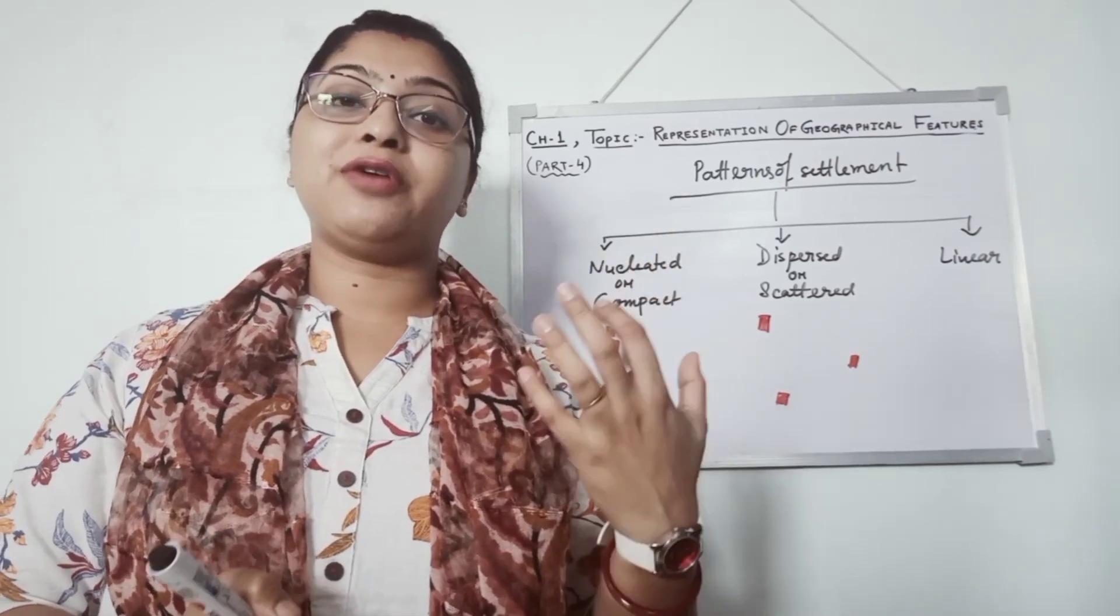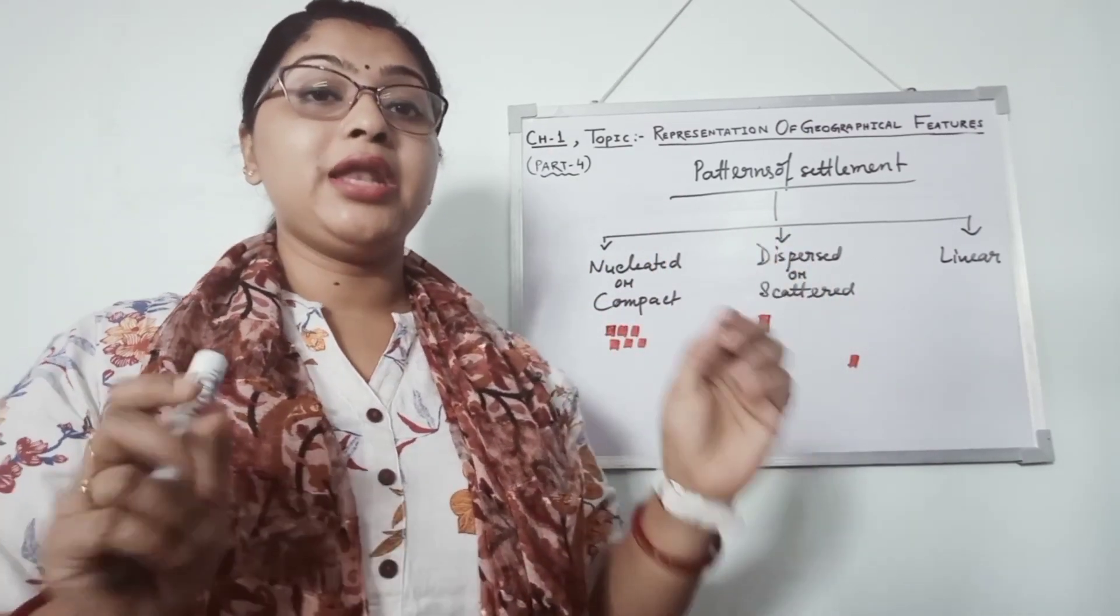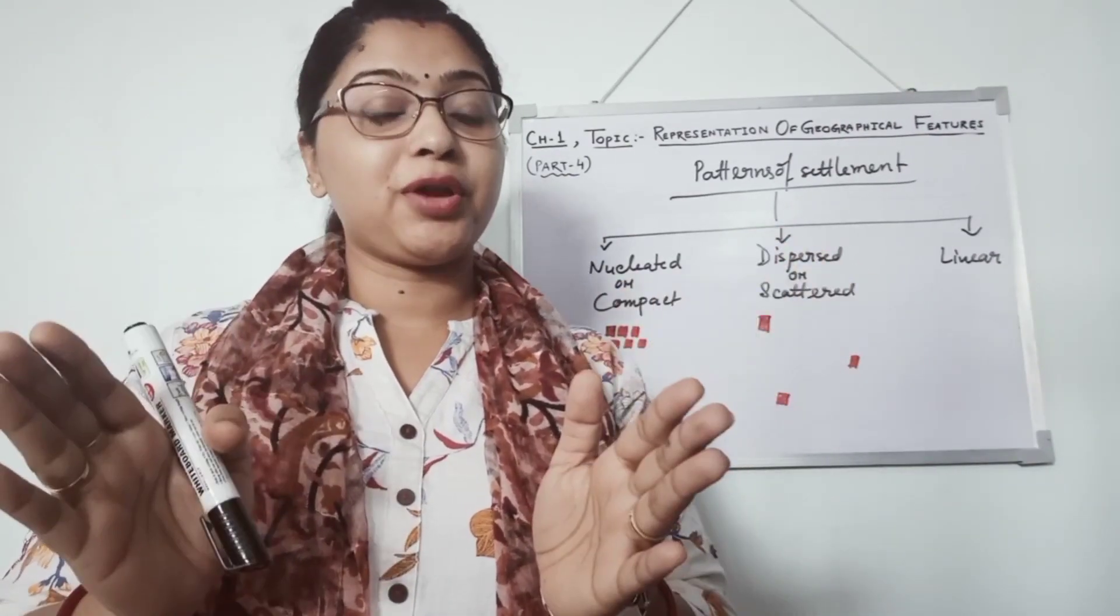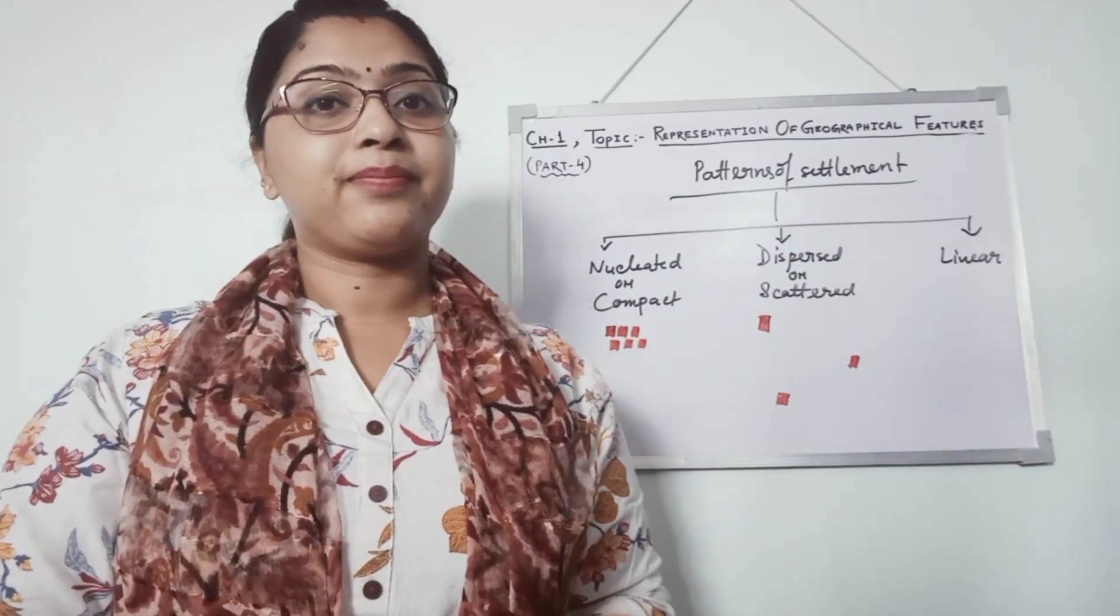Rajasthan, Punjab-Haryana, we can get to see dispersed settlement. Now I am showing the map in the topographical part of topographical map to understand that.